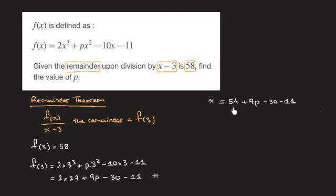Now gathering like terms, we have 54 minus 30, so that's 24 minus 11, which is 13. So we can state that f(3) is equal to 13 plus 9p.